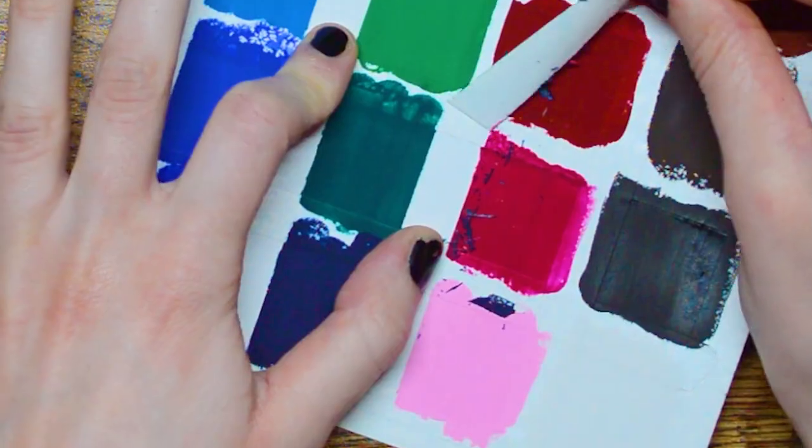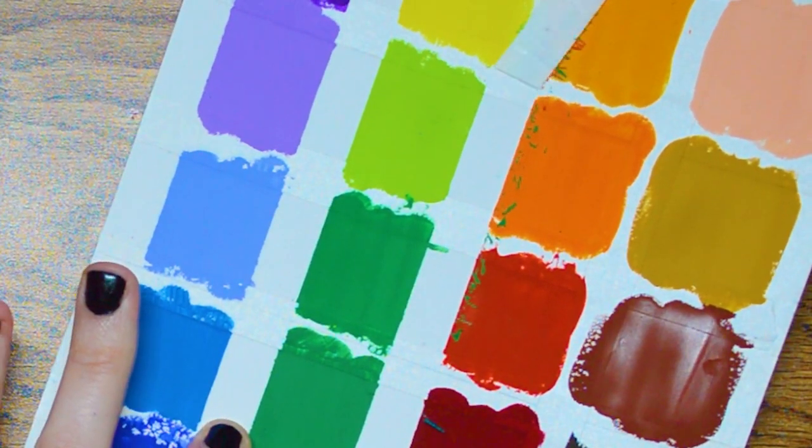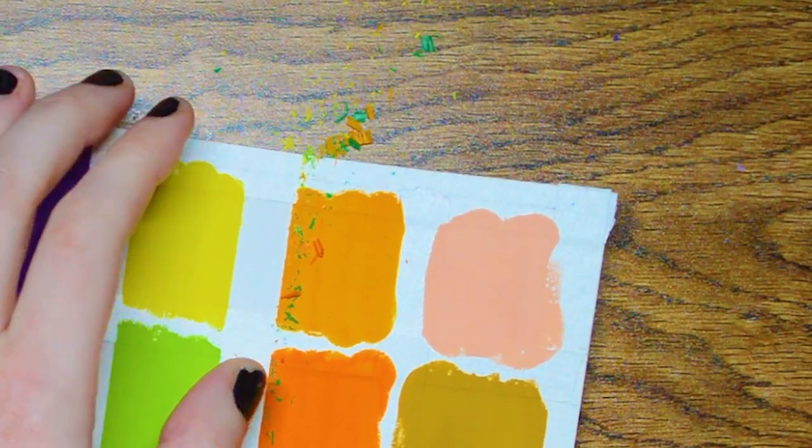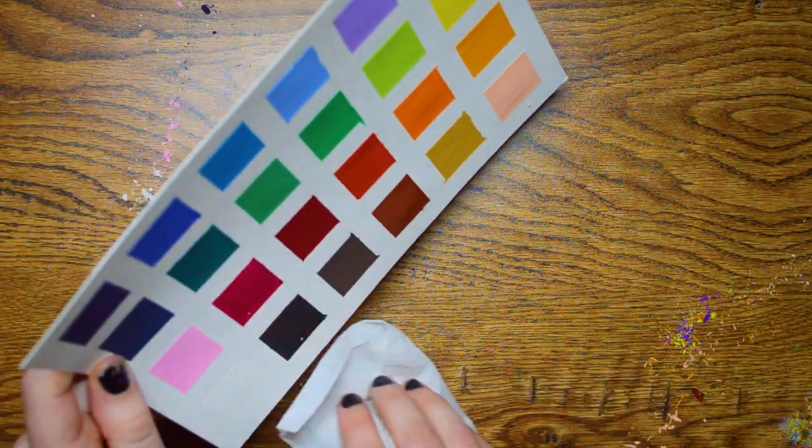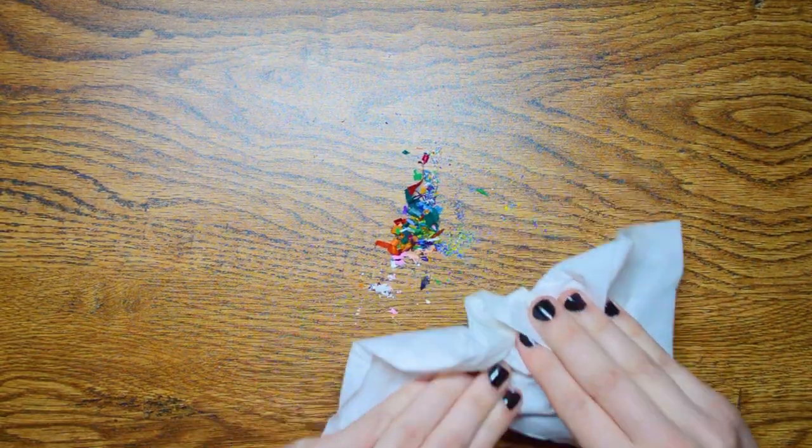Peeling the tape off was not the satisfying experience I was hoping it would be. I knew that the paint was going to run under the tape. That's not the problem. I mean, it's a problem, but it's not the problem. I was not expecting it to come off like pencil shavings. Oh my god. Is this normal?